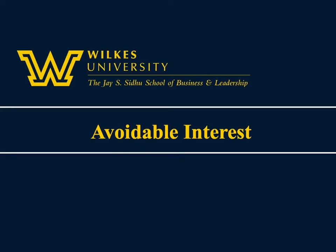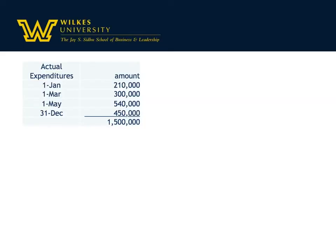This is an example of avoidable interest for intermediate accounting. Assume a company took out a construction loan to construct special purpose equipment that they're going to use in their operations. Construction began on January 1st and concluded on December 31st. The dates are just there to make things easier, so you can make the assumption we're going to capitalize the entire year.